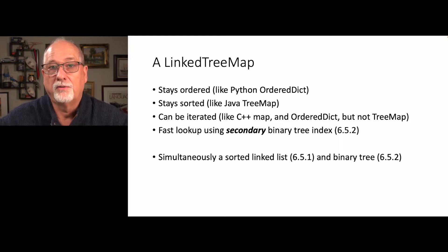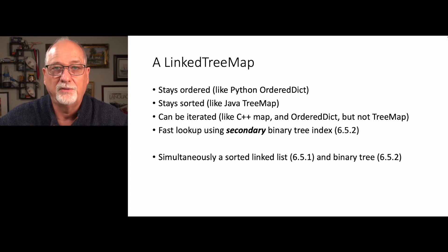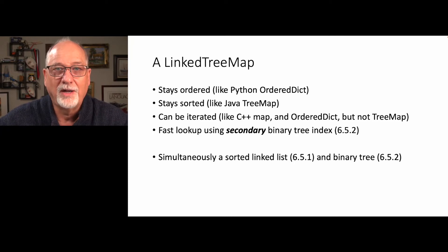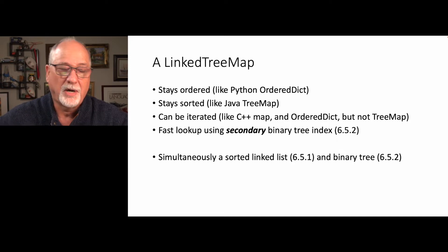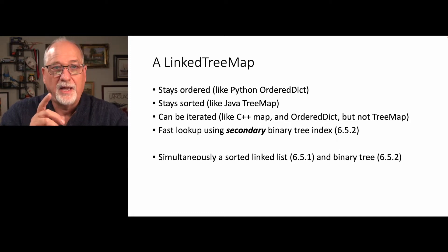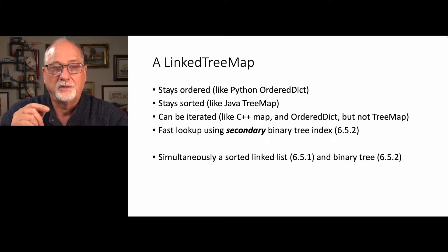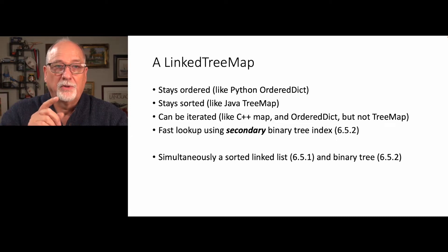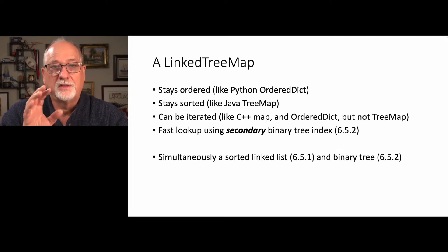It can be iterated like a C++ map or an ordered dictionary, but not a Java tree map — this boggles my mind why you can't, but we'll talk about why they didn't do it. We're also going to have fast lookup. The problem with a list map is lookup is slow, so we're going to use the tree part to do fast lookup. You can see this in section 6.5.2 of the textbook.